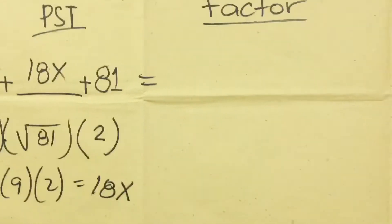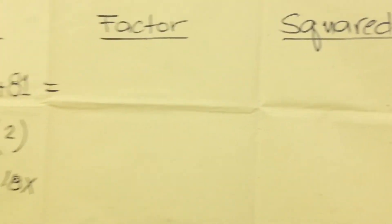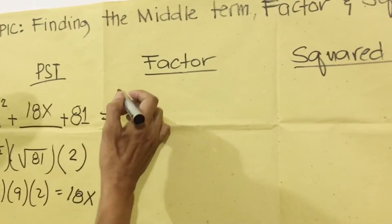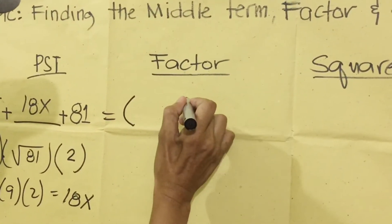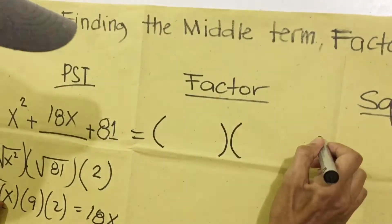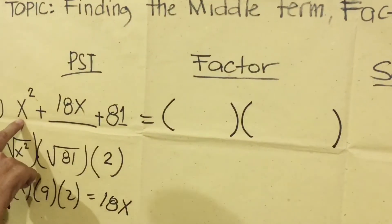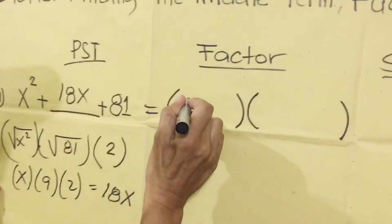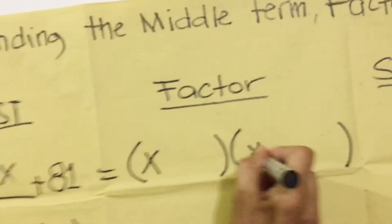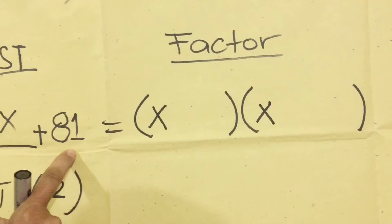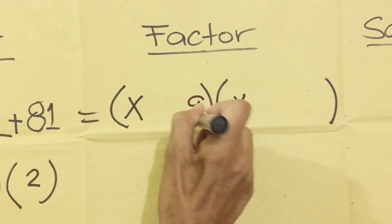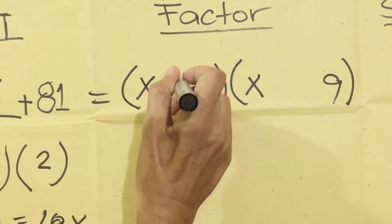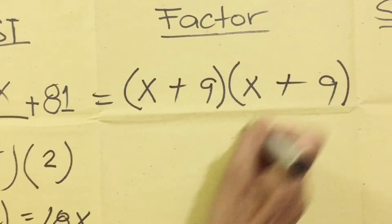Next is how to find the factor of the perfect square trinomial. We always use two parentheses. We're going to find the factor of x squared — x times x equals x squared, so the factor is x. And 9 times 9 is 81, so the factor is 9. Since all terms are positive, we're going to use a positive sign.